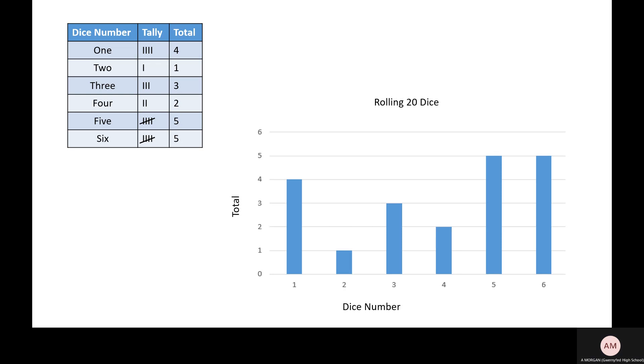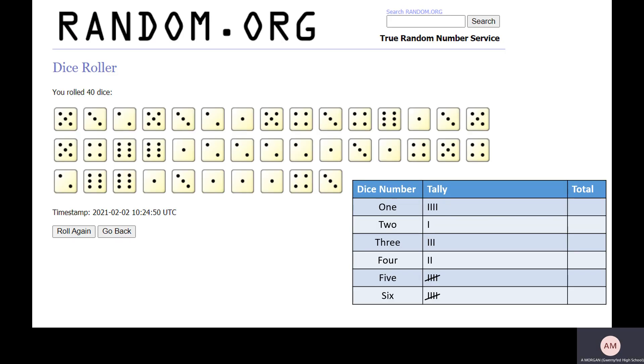So if I change the option from rolling two dice to rolling 40 dice, and I keep my other results, so I'm going to add on to my other results rather than starting again. So 40 dice, there they are. I can add them all into the tally.